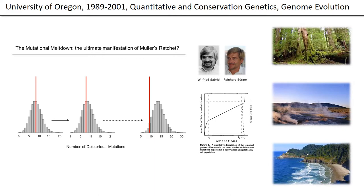One of the things we continued to do while I was there was further develop the concept of mutational meltdown, which essentially takes Muller's ratchet to its final manifestation — extinction of a population. So we were able to estimate the mean time to extinction under various circumstances. This also got me into the field of conservation genetics. The work was done in collaboration with Wilfried Gabriel and Reinhardt Berger.